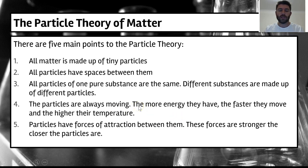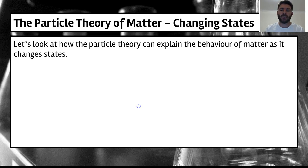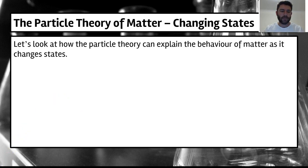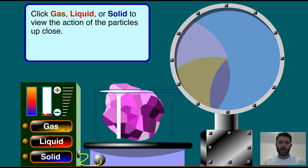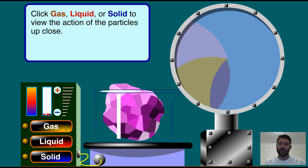Number five: all particles have forces of attraction between them, and these forces are stronger the closer the particles are. Let's have a look at the animation that shows how the particle theory can explain the behaviour of matter, including the changes of state.